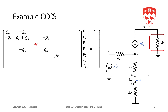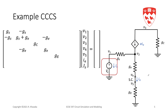Now let's add the stamp for the voltage source. The voltage source is connected between node 1 and ground. We add a new row and column. The stamp has a plus one in row 1 of the new column — adding is to the KCL equation at node 1 — and plus one in the new row at column 1, representing the model equation: v1 equals vs. That is the stamp for the voltage source.